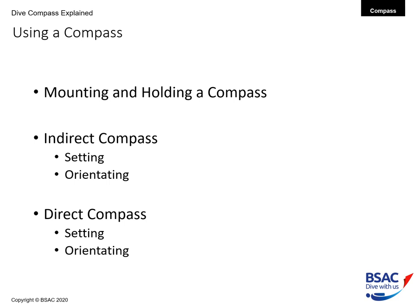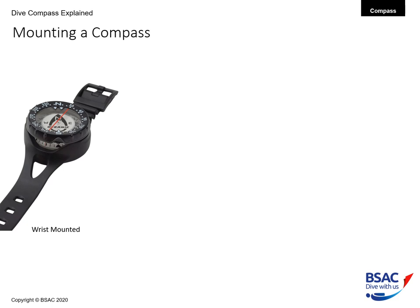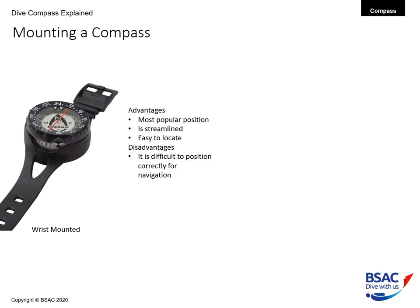In the middle part of this presentation I'm going to look at using a compass, including mounting and holding a compass, and setting and orientating both indirect and direct reading compasses. For mounting, we have a wrist-mounted compass — its advantages are that it's in the most popular position, it is streamlined, and it is easy to locate. The disadvantage is that it is difficult to position correctly for navigation.